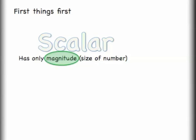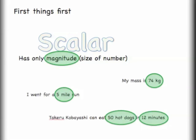Looking a little bit closer at a scalar and coming up with some examples, I can say I went for a 5 mile run. If I were to have said instead that I went for a 10 mile run, I would have given us a scalar with twice the magnitude. I could also say that my mass is 74 kilograms. That's all the information I need to give you for you to understand that particular scalar. I could say that Takaru Kobayashi can eat 50 hot dogs in 12 minutes. That statement has two different scalar quantities in it.